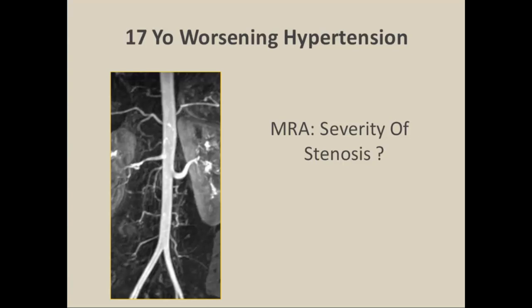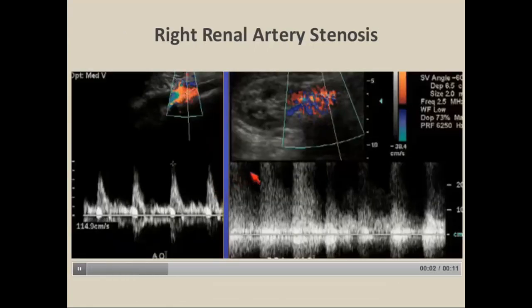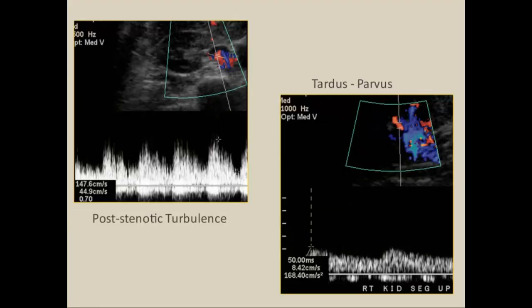Here was a 17-year-old who presented with worsening hypertension, initially worked up with magnetic resonance angiography. Before sending this patient to invasive treatment, we wanted to confirm hemodynamic significance. The Doppler study showed elevated velocities off the scale — aliasing over 300 cm/s — a color bruit artifact overlying the vessel, post-stenotic turbulence as another sign of hemodynamic significance, and tardus-parvus waveforms. Everything confirmed this was indeed a tight stenosis justifying treatment.